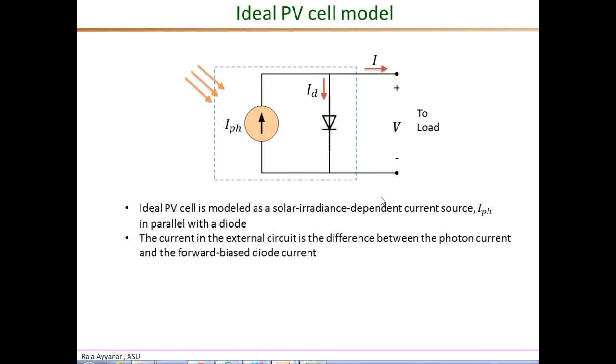So this then is our model of an ideal PV cell. So it is modeled as a light generated current source. And the value of this current source depends on the level of solar irradiance. So this current source in parallel with the P-n diode. So the characteristics of this P-n diode we will discuss in the next slide. And the final current that goes to the external circuit, this I, is therefore the difference between the I photon, the light generated current, and the forward bias current into the diode. And the voltage across the external circuit is V.